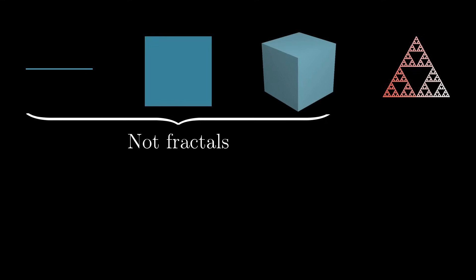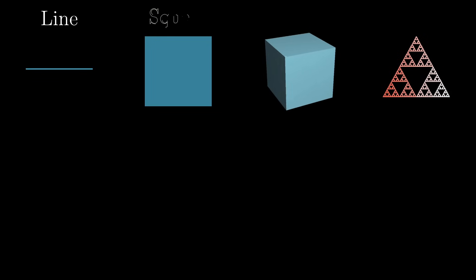It actually helps to start the discussion here by only looking at perfectly self-similar shapes. In fact, I'm going to start with four shapes, the first three of which aren't even fractals: a line, a square, a cube, and a Sierpinski triangle. All of these shapes are self-similar.